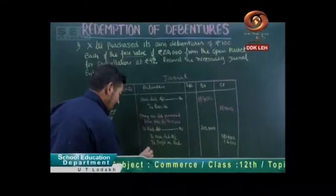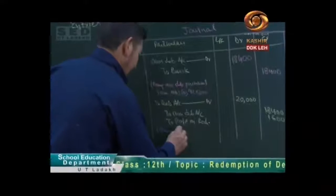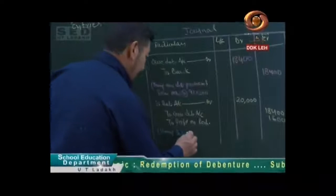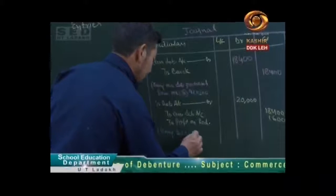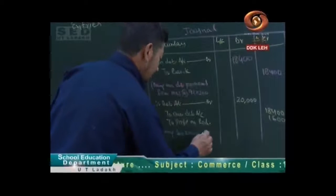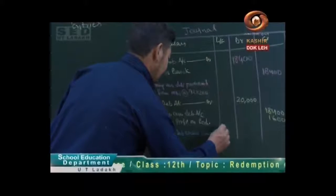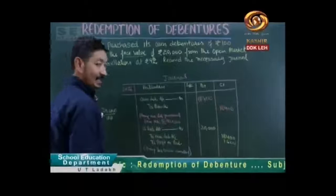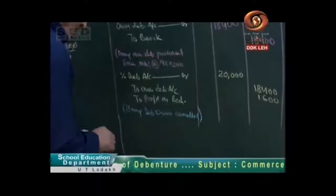Now we will write the narration: Being debenture of Rs. 20,000 cancelled. What did we do? We purchased from open market and cancelled from open market.